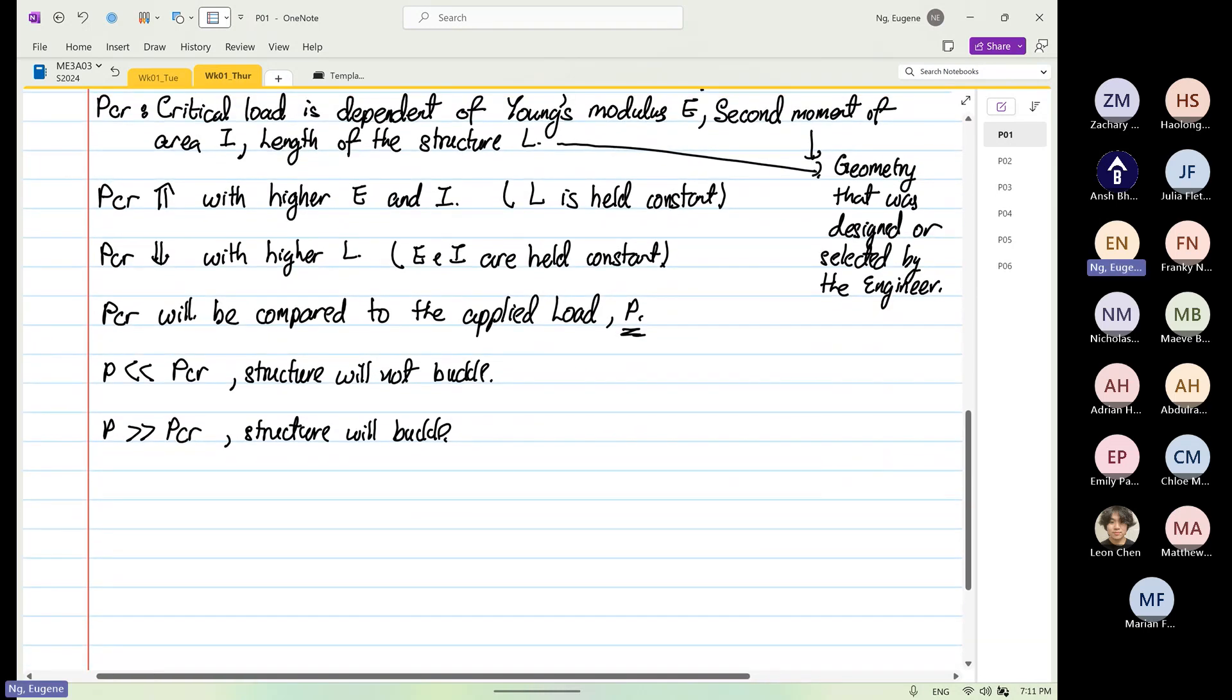And then we come up with, if we know that critical stress in buckling is equal to P_CR divided by area. And P_CR, as we mentioned earlier, is n squared pi squared multiply by EI over L squared divided by A.